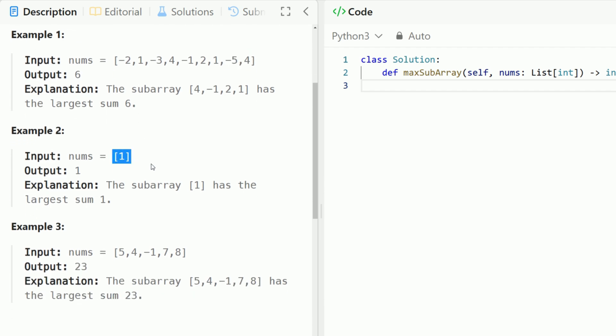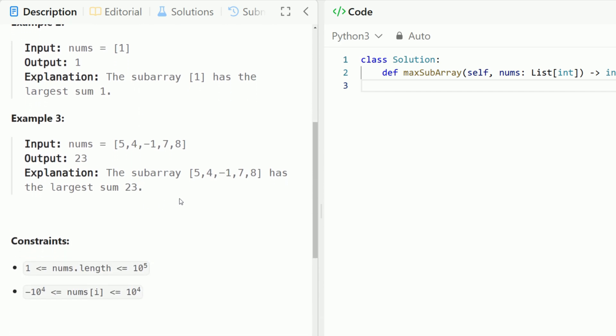If we have an input with just one element, then the largest sum is just that element. And a subarray could actually be the entire array as well. So in this example the subarray with the maximum sum is actually the entire array. That's possible as well.